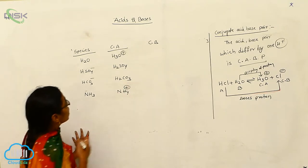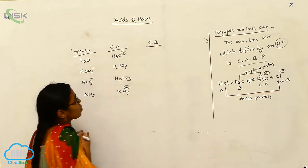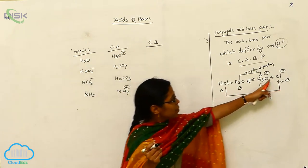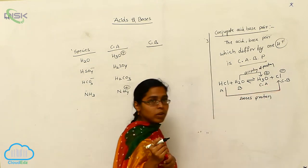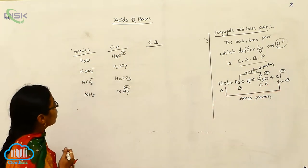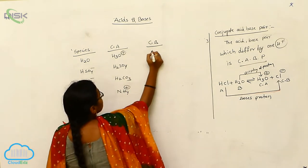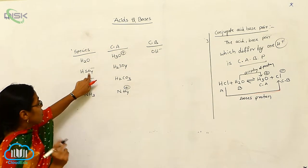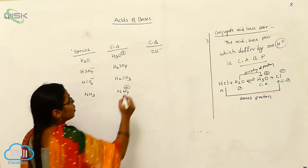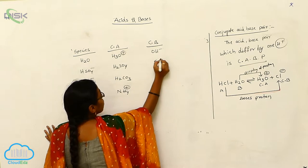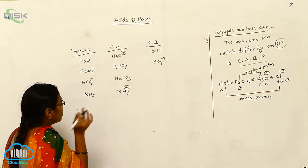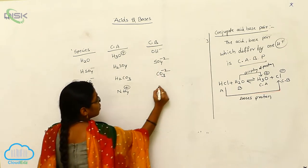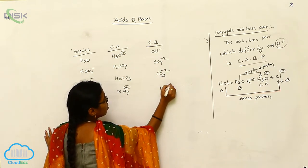Now for the conjugate base: the conjugate base is always formed by the losing of protons. So whenever a proton is lost, for H₂O the conjugate base is OH⁻. For HSO₄⁻, losing H⁺ gives SO₄²⁻. For HCO₃⁻ losing H⁺ gives CO₃²⁻. And for NH₃ it gives NH₂⁻.